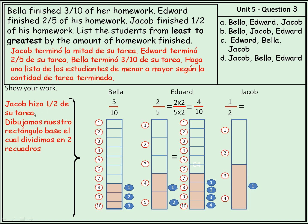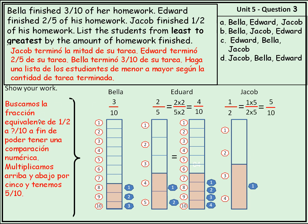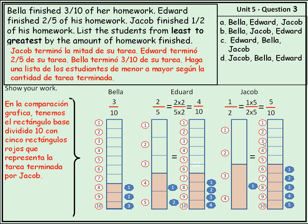Jacob hizo la mitad de su tarea. Dibujamos nuestro rectángulo base, el cual dividimos en dos recuadros. El recuadro base es la tarea, lo dividimos en dos recuadros. Marcamos uno de los recuadros en rojo. Buscamos la fracción equivalente de un medio — ¿cuánto es entre diez? Multiplicamos arriba y abajo por cinco y tenemos cinco décimos. En la comparación gráfica tenemos el rectángulo base dividido en diez, con cinco rectángulos rojos que representan la tarea terminada por Jacob.